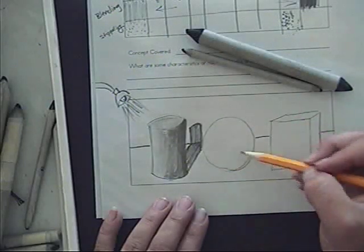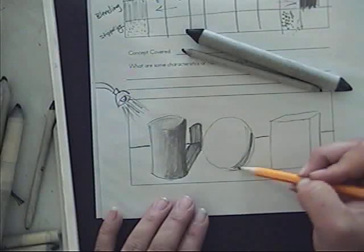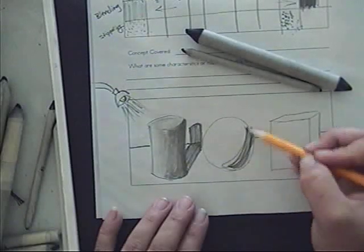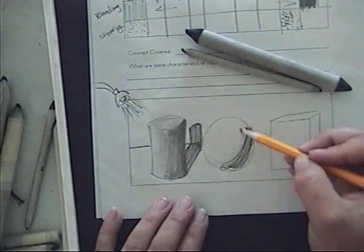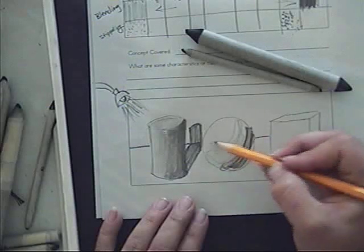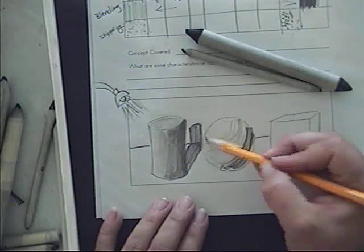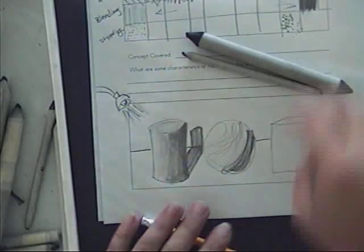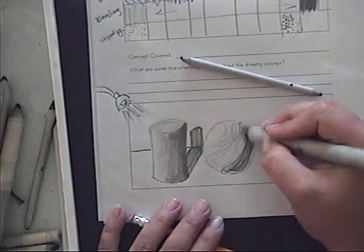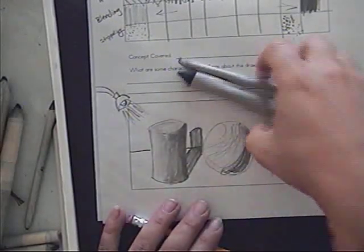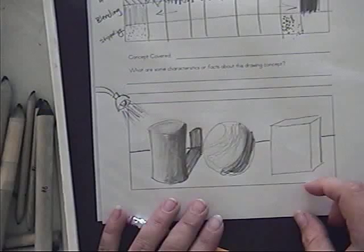Same thing here with your sphere on the opposite side, your dark, dark values, somewhere in the mid-tones, medium values, and then very, very light up at the top. Again, blend that all together using your blending stumps. I want you to try these tools out.